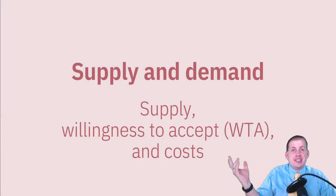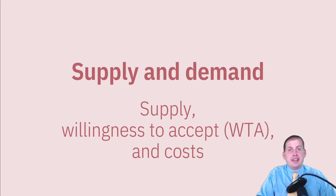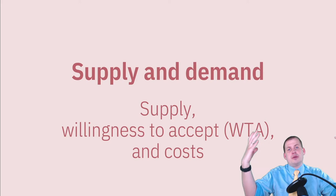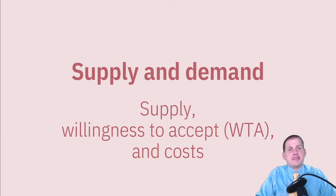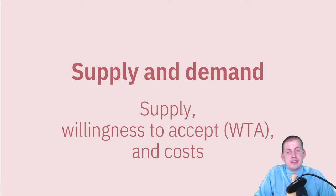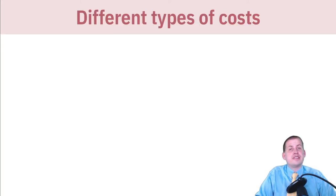We just talked about demand curves, which are based on real things out in the world — the aggregate of everybody's individual preferences, everybody's indifference curves added up and combined across a whole society. Supply curves are also real and based on actual things. They're not based on preferences; they're based on the costs of creating things, and there are all sorts of different costs inside a firm.